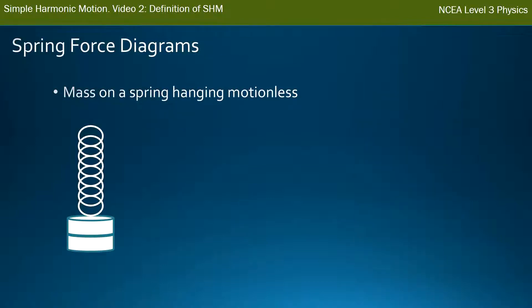Assume we've got a mass connected to a spring and it's hanging motionless — it's not accelerating, so we know the net force is zero. If I ask you to draw the force diagram, you would find something like this: we redraw force diagrams as a dot, with the force of gravity going down and the tension force from the spring going up. Those two should be equal to each other because the mass is not accelerating.